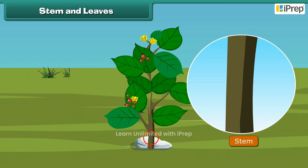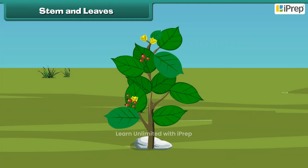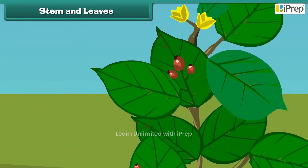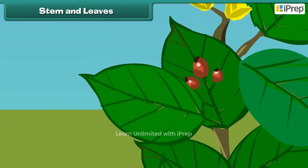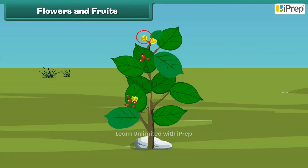A stem also supports the plant. Do you know which part of the plant helps it prepare food? That's right — it is the leaves. Leaves are green in color and are born out of the stem.